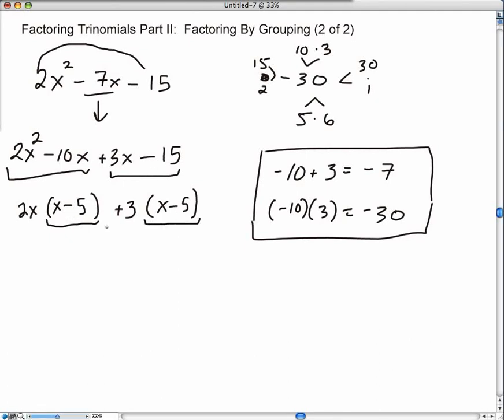So, the x take away 5, they're the same binomial. I'm going to factor it out. I'm going to extract it. I'm going to take it out. And whatever's left over, which is the 2x plus 3, I'm going to write it out. Perfect.